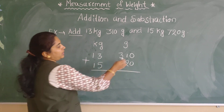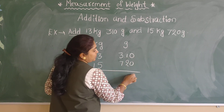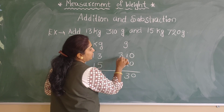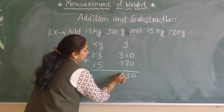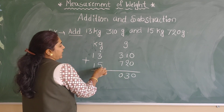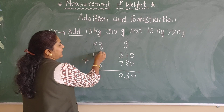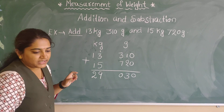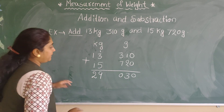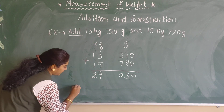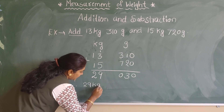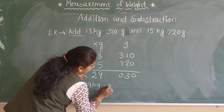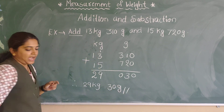I will add now. Starting from the right: 0 plus 0 is 0, 0 plus 0 is 0, then 2 plus 1 is 3, 7 plus 3 is 10 — I will carry 1 over. Then 5 plus 5 is 10, carry 1. Finally, 1 plus 1 plus 1 carry is 29 kg. The answer is 29 kg and 30 gram.